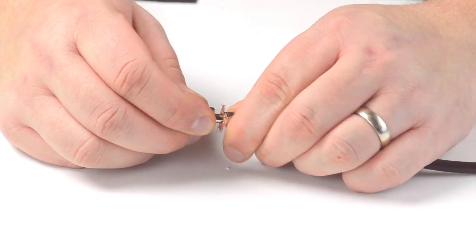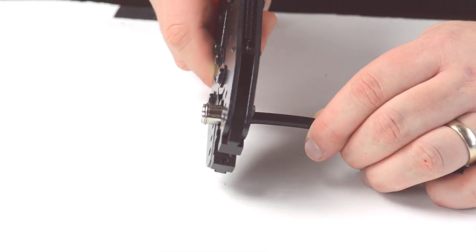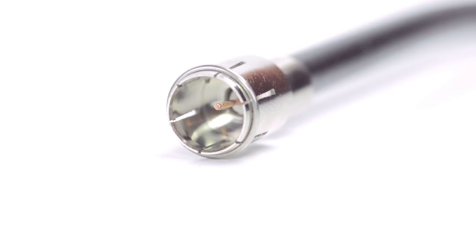Then slide up the ferrule to the base of the connector, folding the shield with it. Crimp the ferrule onto the outer jacket to complete termination.